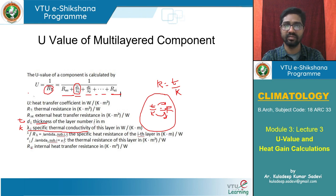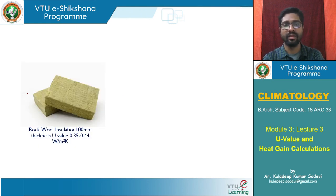In this example with rock wool at 100 mm having about 0.35–0.4 W/m²·K — let's say 0.4 — that is U1 for 100 mm thickness.